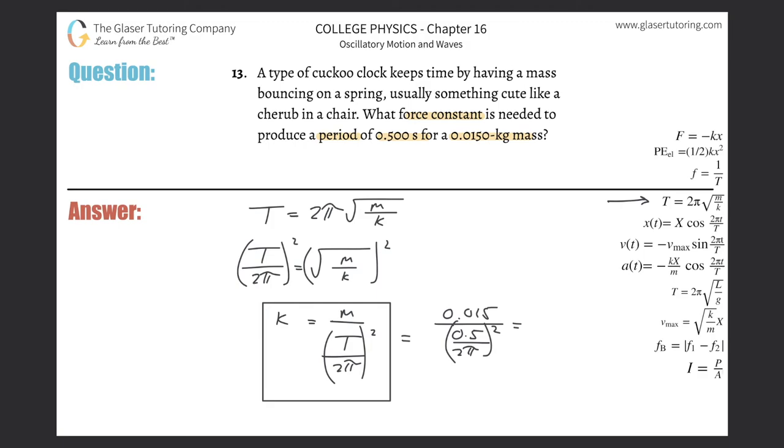So 0.015 divided by—parenthesis—0.5 divided by 2π, close the parentheses, square it, and we get about 2.3, so 2.37 or so.